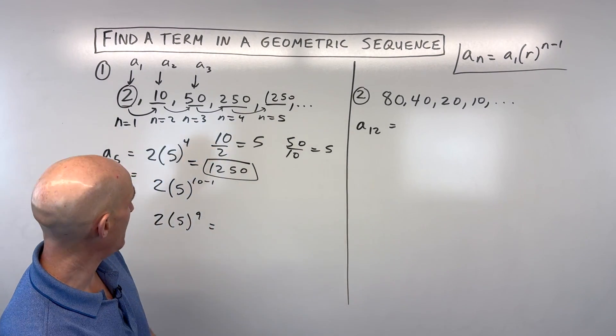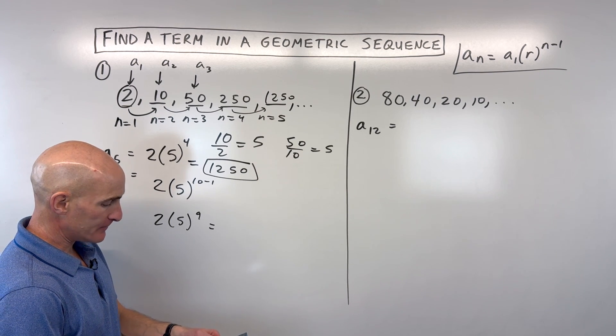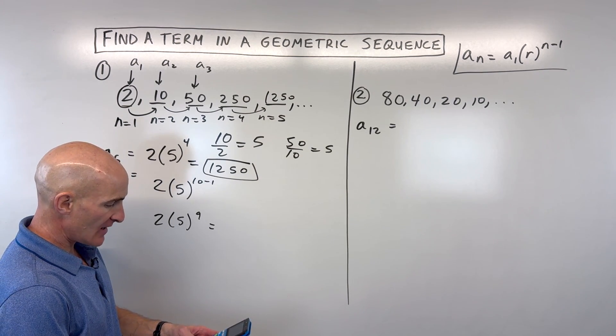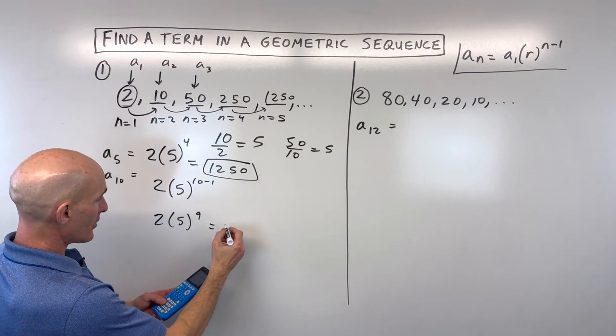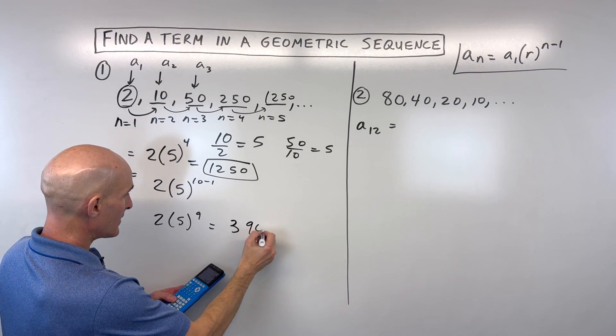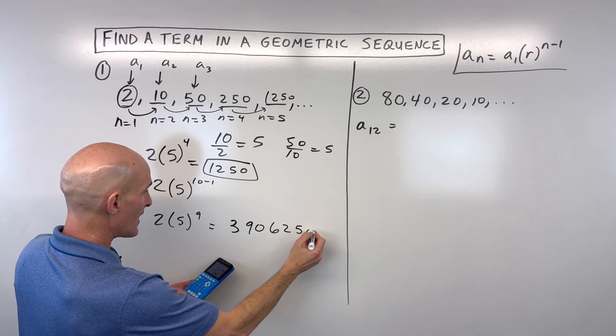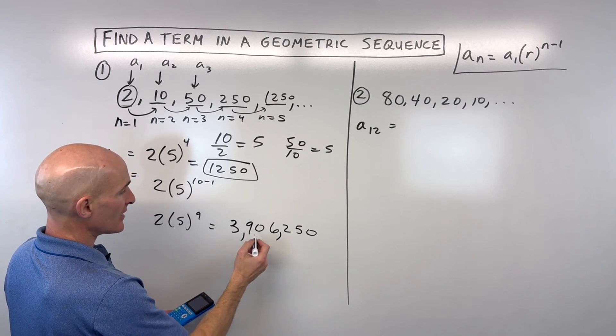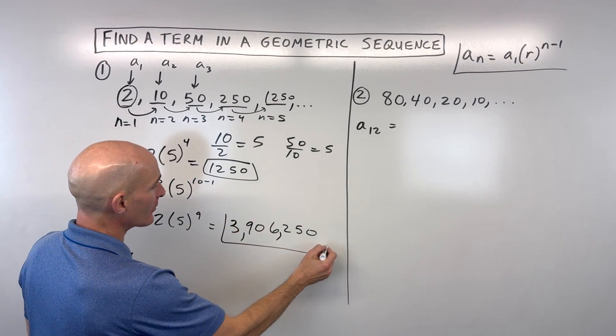Which, let's go to the calculator on that one and see what we get. 2 times 5 to the ninth, I'm getting a large number here, 3, 9, 0, 6, 2, 5, 0. So it's like 3.9 million, okay, roughly.